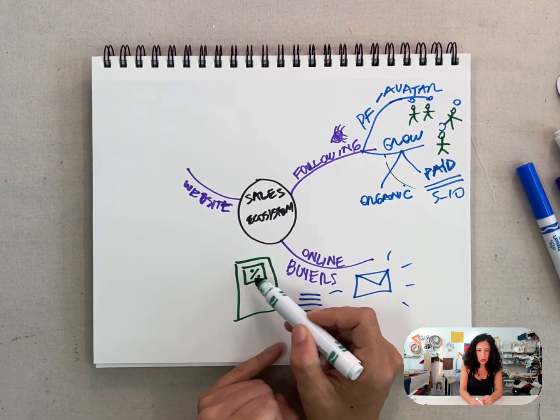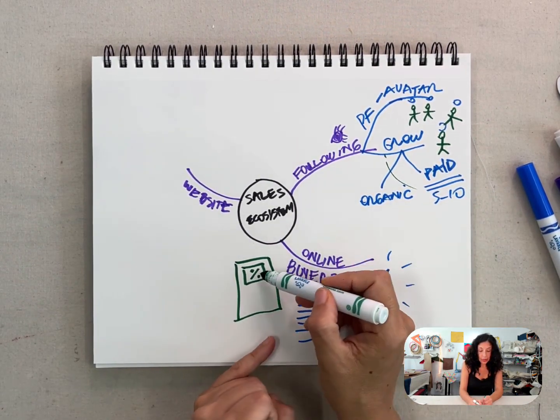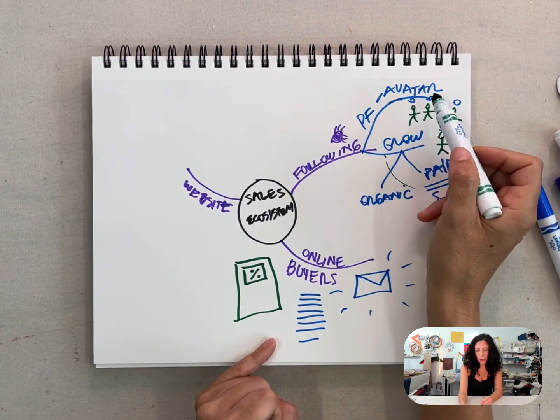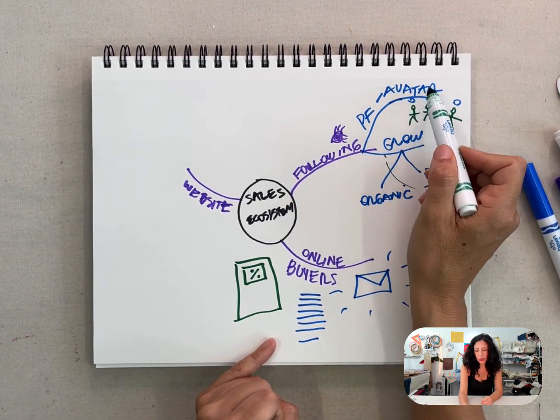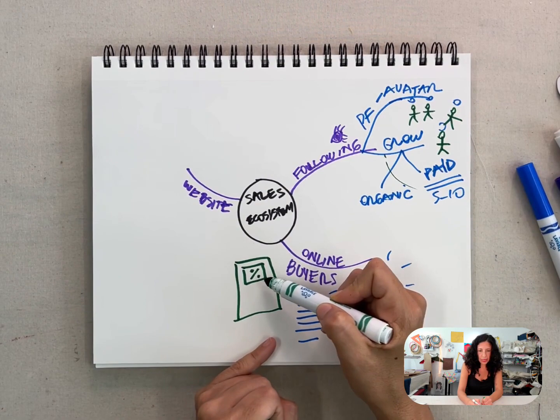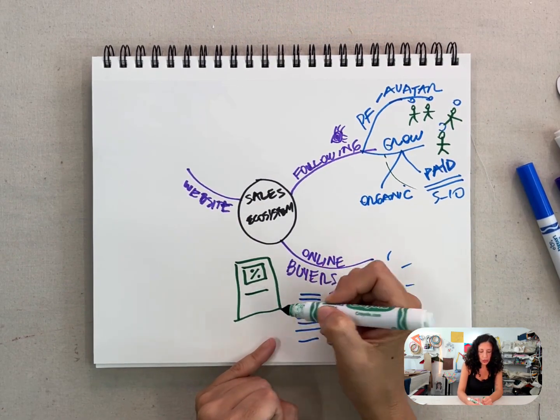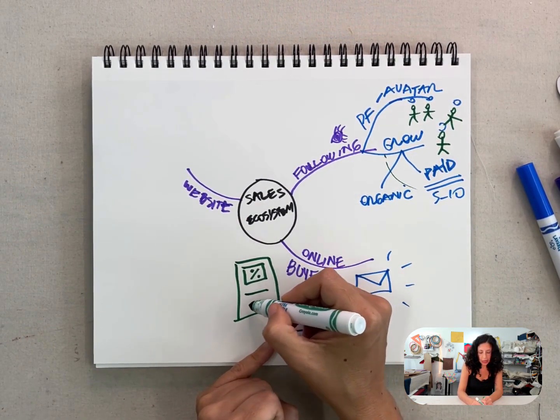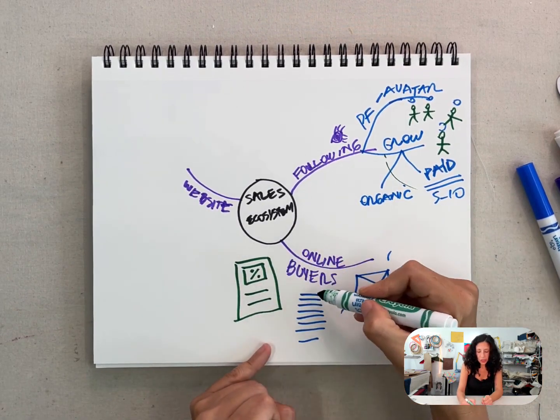But basically you offer something interesting, which, think about it, if you know the perfect follower and you know the avatar, you know what they like, you know what to offer them here that will convince them to give you their name, their full name, and their email. And then you have the collection here, the list.